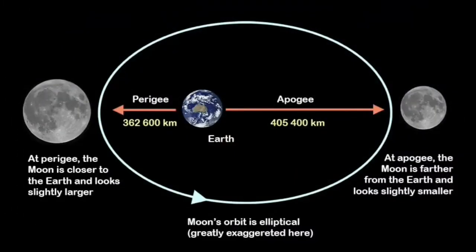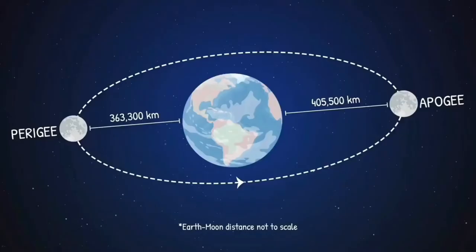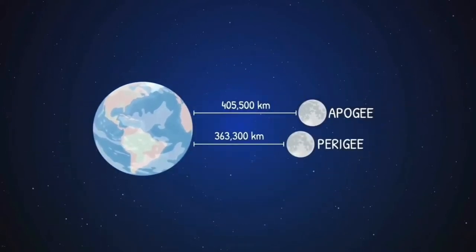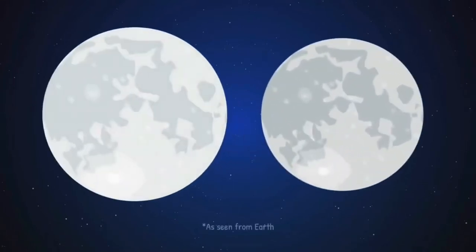The orbit of the moon around the earth is not circular. It is somewhat elliptical, which means that it is closer to the earth for some time and far for the other time. If the full moon phase happens to coincide with the time it is closest to the earth, the moon is called a supermoon.